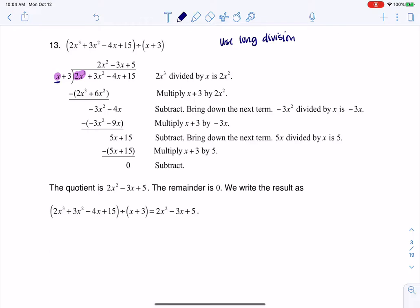So what do I need to multiply x by to get up to 2x cubed? Well, that would be 2x squared. And then I'm going to take this term and multiply it to both terms of that binomial. That divisor is a binomial. So when I do that, 2x squared times x gets me 2x cubed.